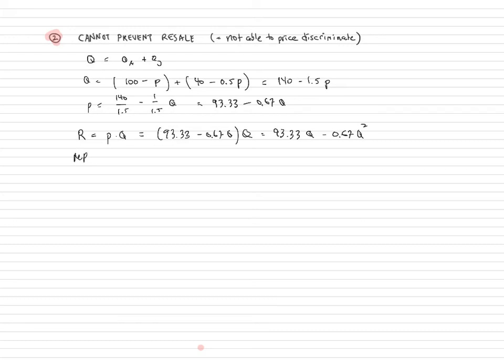I'm then going to find a marginal revenue. Of course, we know what it's going to be, same intercept and twice the slope. We'll set that equal to the marginal cost. And in this example, marginal cost is 20.